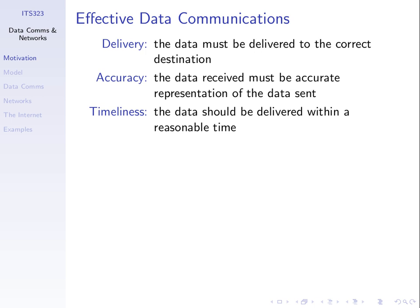What do we mean by effective data communications? Three main things. We want to have correct delivery of the information, accurate delivery, and within a reasonable time — timeliness of delivery. We will say our communications is effective if the data is delivered correctly to the correct destination, if what is received is the same as what was sent, and if the data is received within some reasonable time from when it was sent.